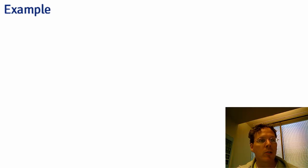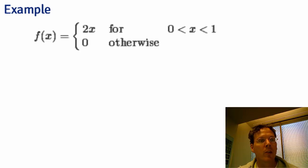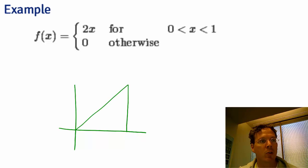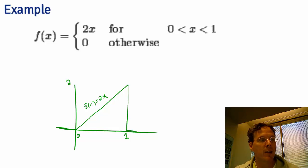The bell-shaped curve is a rather difficult density to work with, so let's work with a much simpler density — one that looks like a right triangle. Specifically, f(x) = 2x for x between 0 and 1, and 0 otherwise. As context, let's say this represents the proportion of help calls addressed in a random day by a helpline.